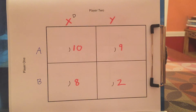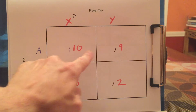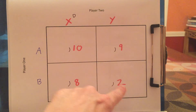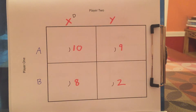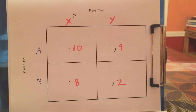Now let's look at dominant strategies from the viewpoint of player two. In this game, X is the dominant strategy. If A is played, player two does better with X compared to Y. And if B is played, player two does better with X compared to Y. So player two is always better off playing X over Y, which makes X the dominant strategy. I didn't bother filling in the payoffs for player one because they're irrelevant for determining whether player two has a dominant strategy.